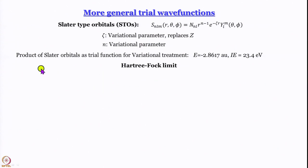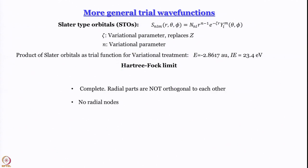When we use a product of Slater-type orbitals as the trial wave function for a variational treatment, we get a value of E = −2.8617 atomic units and an ionization energy of 23.4 electron volts, which is called the Hartree-Fock limit. Before leaving this discussion, let me reiterate that Slater-type orbitals form a complete set. However, the radial parts are not orthogonal to each other, precisely because the Laguerre polynomial is missing. Remember, orthogonality in hydrogen atom wave functions came from the Laguerre polynomial, the Legendre polynomial, the Hermite polynomial, and so on.